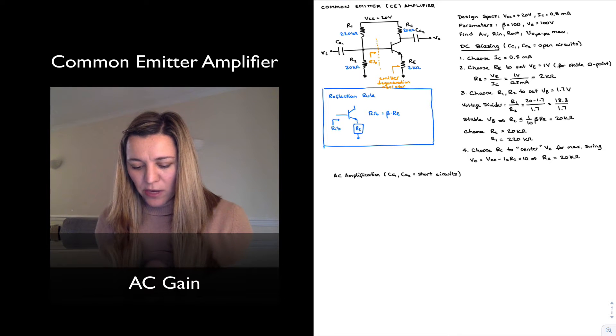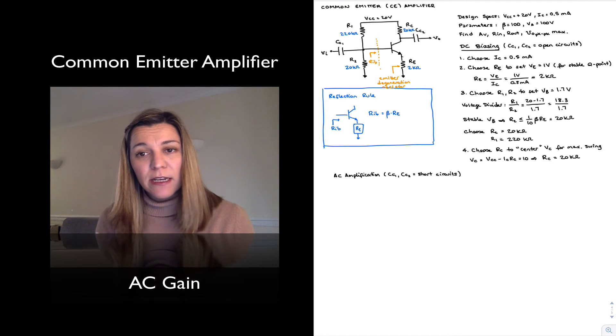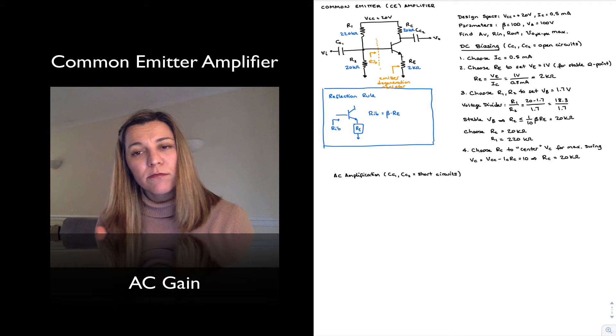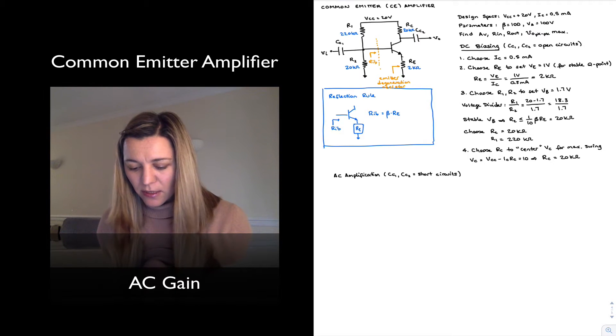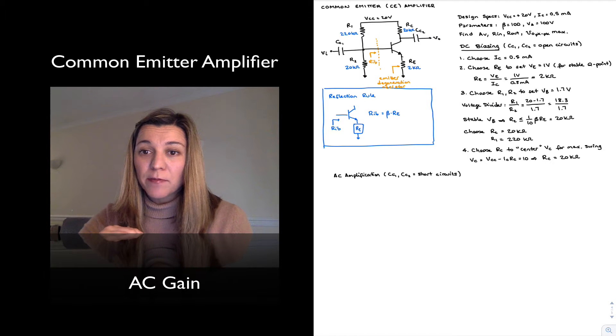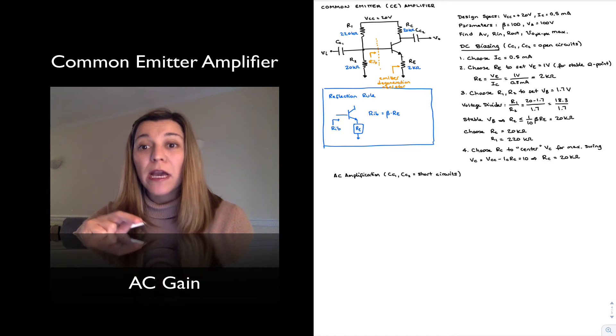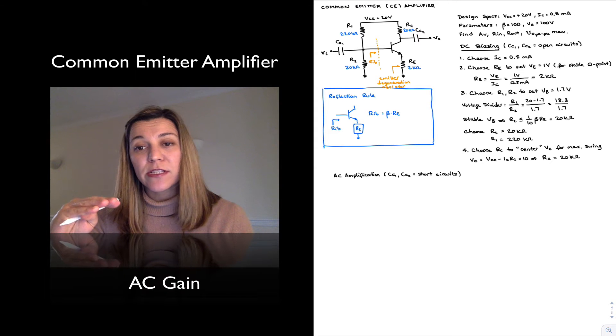So we have an input signal, and it's a small AC signal. Small means small enough that it's not going to alter our Q point for the circuit, for the transistor. And so, let's imagine that the signal, the input signal, is going up slightly, so it's slightly increasing.